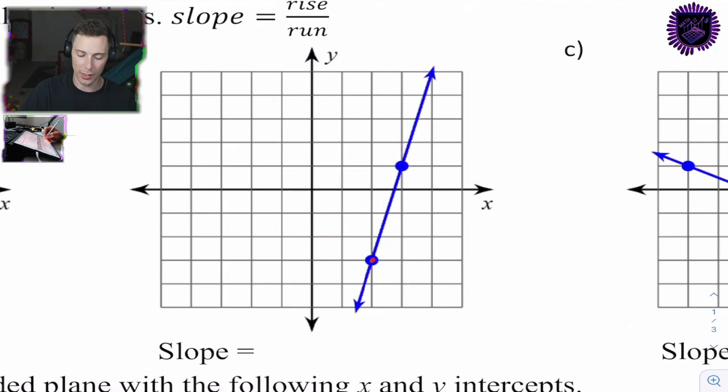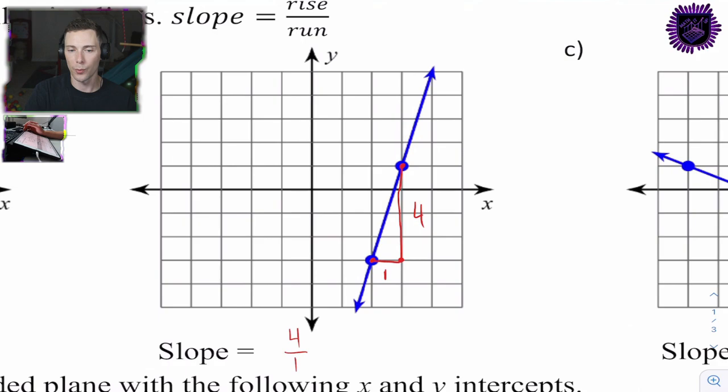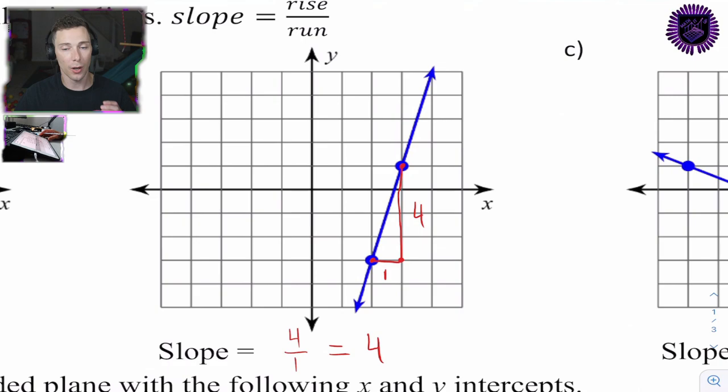Next one, 1b. Again, start with the most left point. Slide over — the run is going to be 1, and the rise is 1, 2, 3, 4 points — so 4. The slope is 4 over 1. That simplifies: 4 divided by 1, so the slope equals 4. It's a positive 4, an upward slope.